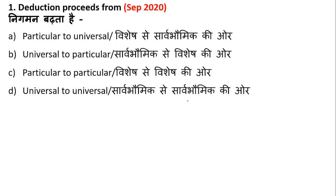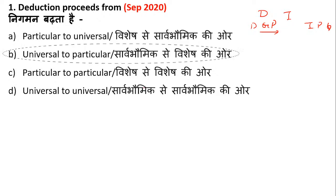First question is: deduction proceeds from. So in logical reasoning, reasoning is of two types: deductive reasoning and inductive reasoning. When the deductive word comes, remember DGP, and inductive remember IPG. So deductive reasoning proceeds from general to particular — you can also call general as universal. Universal to particular.